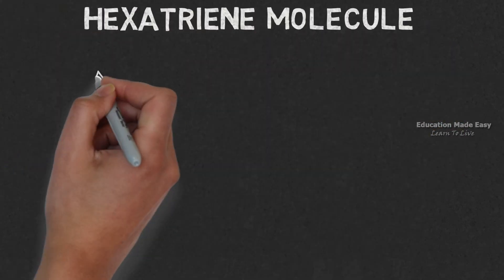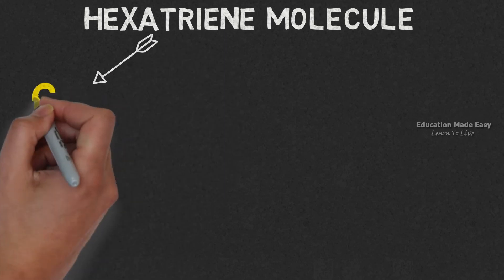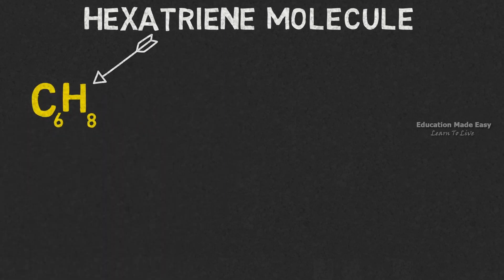Hexatriene molecule. The chemical formula of hexatriene is C6H8. Let us draw the structure of C6H8.